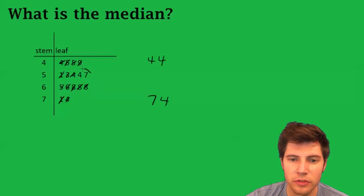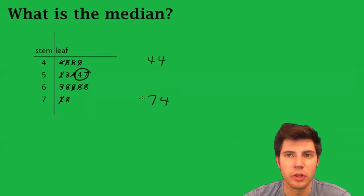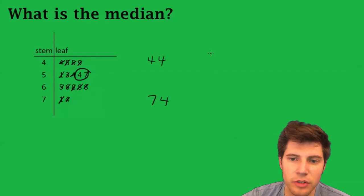And now we're in the middle, this 4 and the 7. So if you have two numbers in the middle, you take the average of those two numbers.